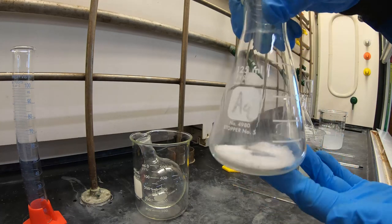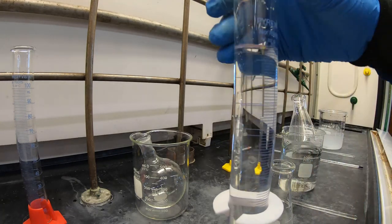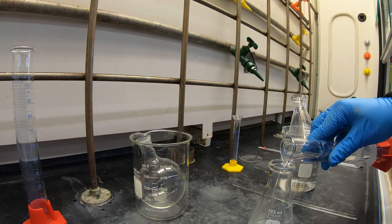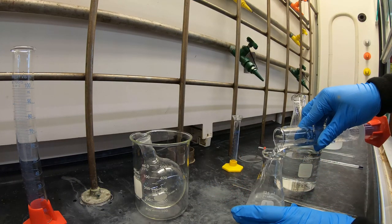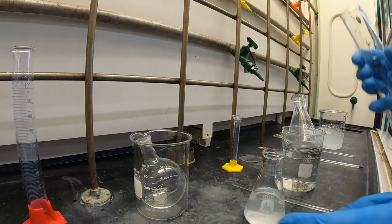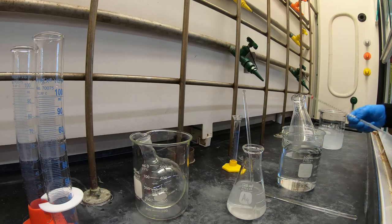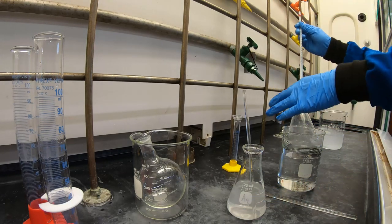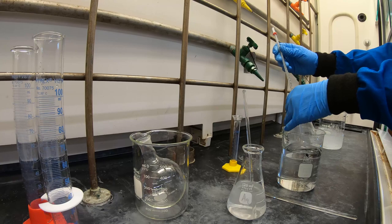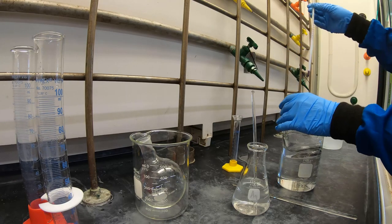While that solution is warming, place 5 grams of sodium acetate trihydrate in a clean Erlenmeyer flask. Dissolve this using 100 mL of deionized water. Now check the temperature of the flask in the hot water bath. Once it has reached the desired temperature, remove it from the bath and place on the bench.